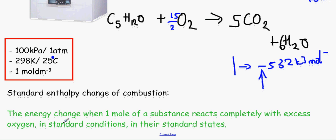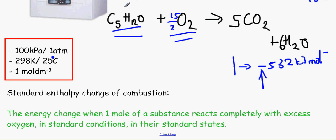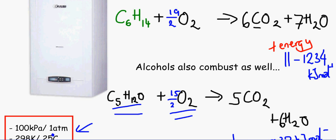As mentioned, combustion has its own standard enthalpy change of combustion. This is defined as the energy change when one mole of a substance reacts completely with an excess amount of oxygen — making oxygen the limiting reagent — under standard conditions and in their standard states. This is important because we want to be able to compare one reaction with another.